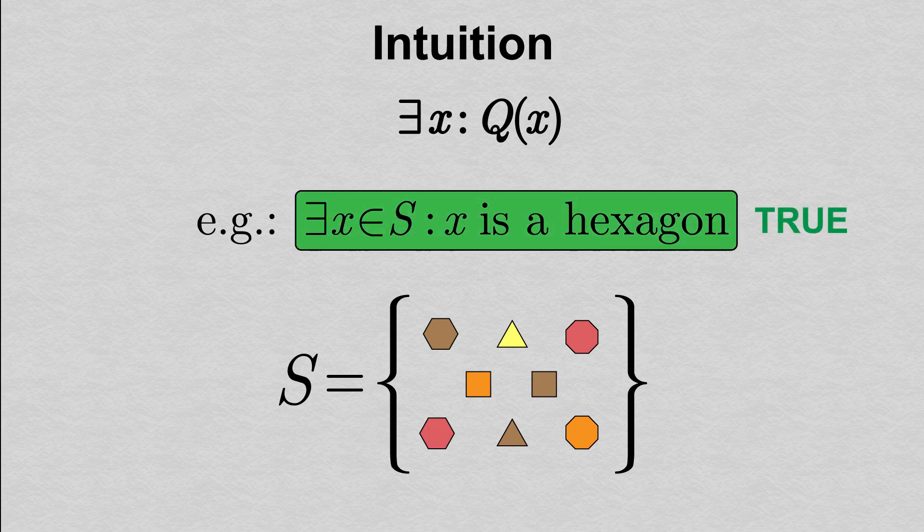This statement is true because, well, there is a hexagon. Note that it's possible for there to be more than one such x. All we need is for there to be at least one of them.